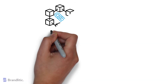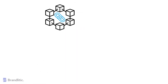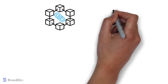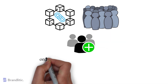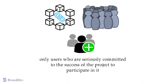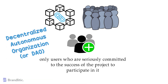In the decentralized world of blockchain, projects are often looking for ways to distribute a great amount of power and responsibility to their users. But in order for that to work, they need to employ a method that guarantees only users who are seriously committed to the success of the project participate in it. To do so, one way to achieve this is by creating a special type of collectively managed organization known as Decentralized Autonomous Organization, or DAO.